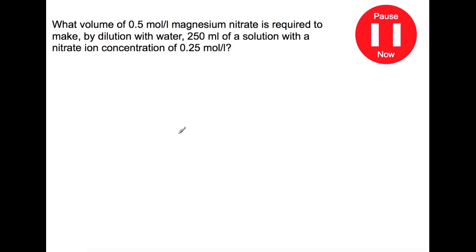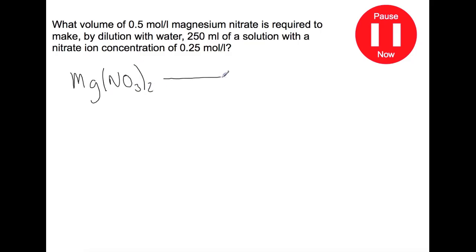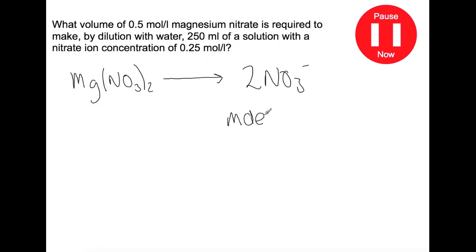Pause the video now and try this question. This question is very similar — we need to start with the formula of the chemical given, which is magnesium nitrate. Magnesium has a valency of two and nitrate has a valency of one. Later in the question we're told we're looking at nitrate ion concentration, so we need to write down how many moles of nitrate ions we get from a mole of magnesium nitrate. We have the volume and concentration of the nitrate ions, so we can work out the moles.